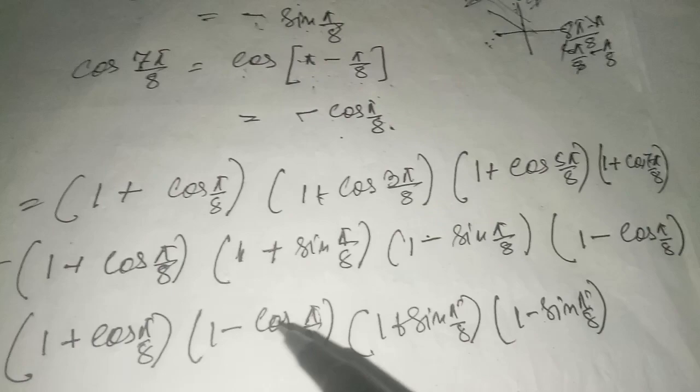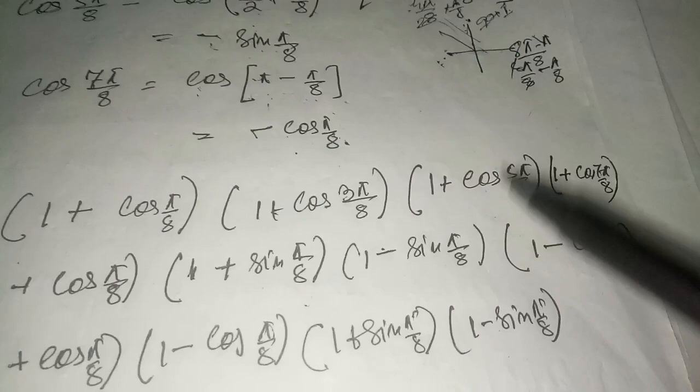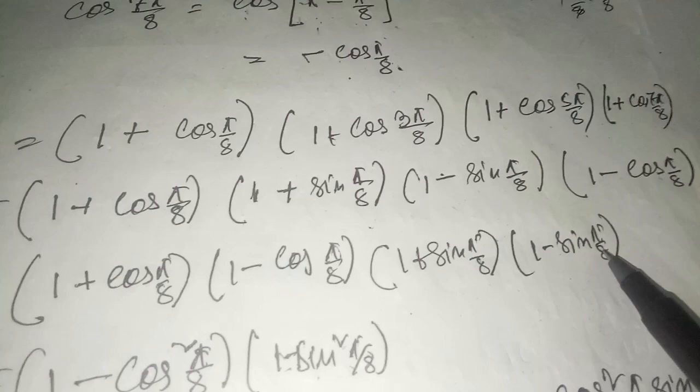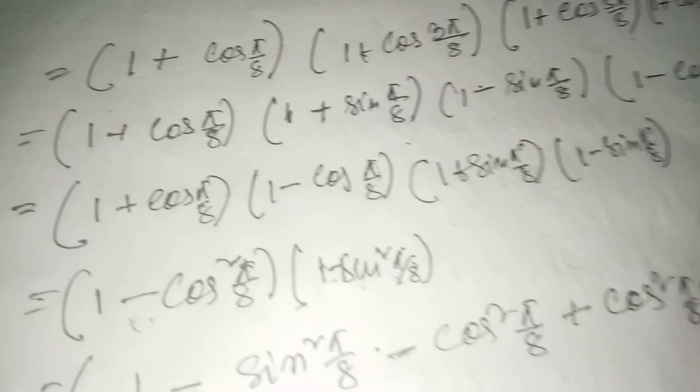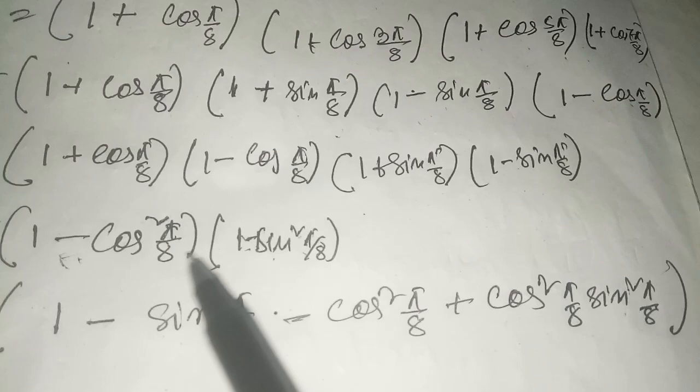Now substituting all values into the left-hand side: (1 + cos π/8)(1 + cos 3π/8)(1 + cos 5π/8)(1 + cos 7π/8) becomes (1 + cos π/8)(1 + sin π/8)(1 − sin π/8)(1 − cos π/8). Rearranging: (1 + cos π/8)(1 − cos π/8) × (1 + sin π/8)(1 − sin π/8) equals (1 − cos² π/8)(1 − sin² π/8).